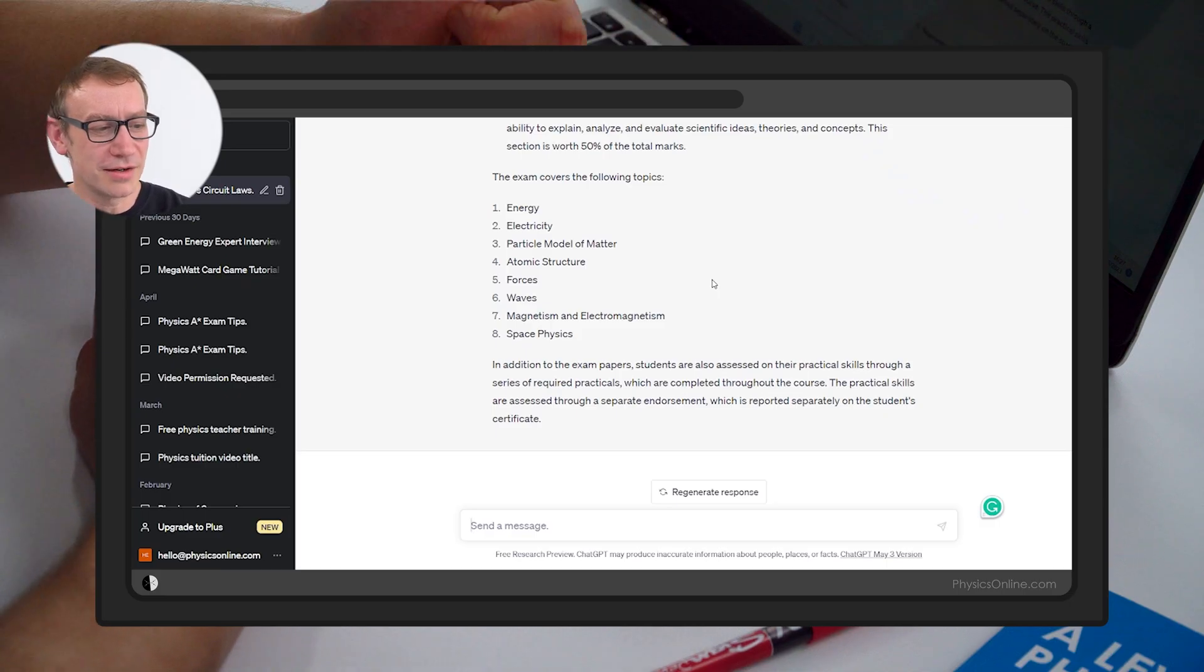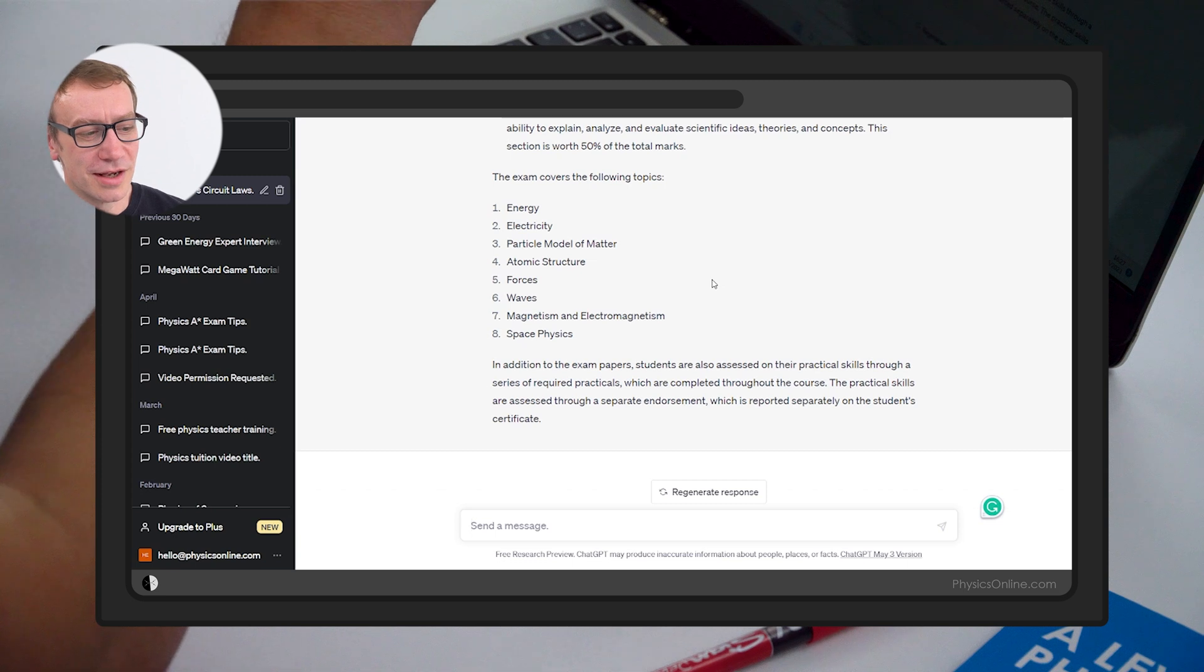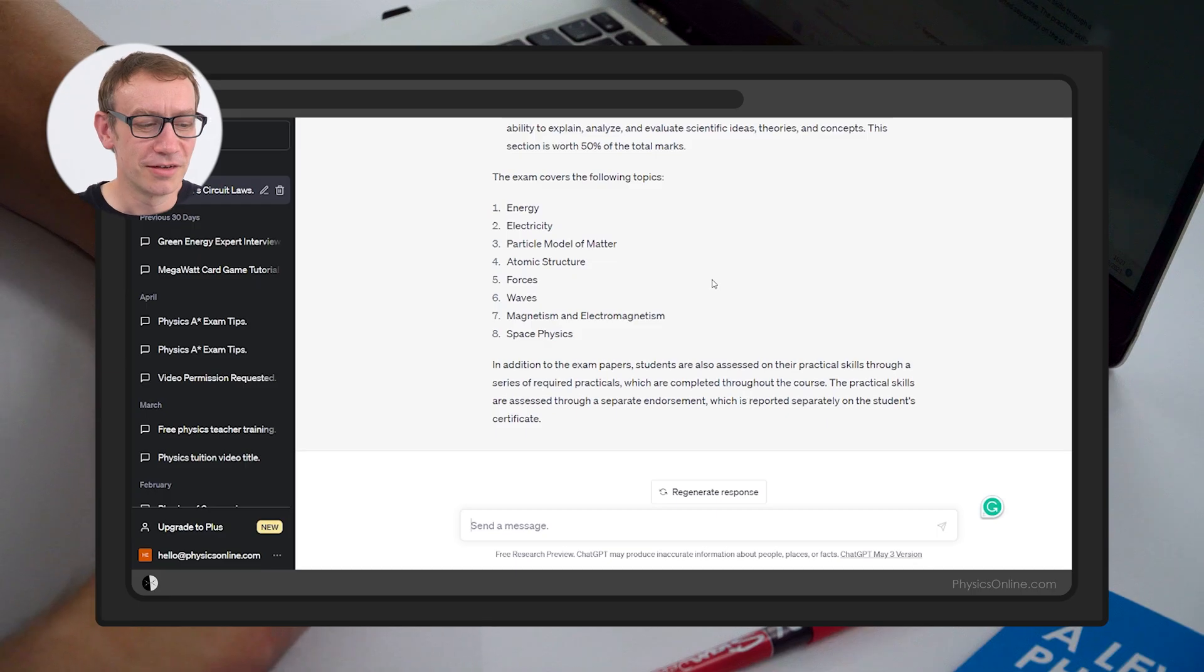And again, this is where AI is kind of 90% correct. The exam covers these topics: energy, electricity, particle model of matter, atomic structure, forces, waves, magnetism, electromagnetism. That is correct for trilogy, but then it says space physics, but that's only assessed if you're doing the triple science. So I would say the danger of relying on AI is that not all the information it gives is correct. I would say that's about 80% correct, but you don't know which 80% it is.